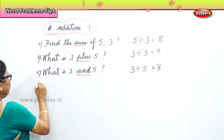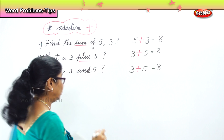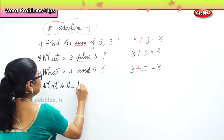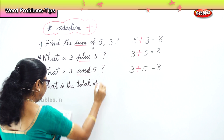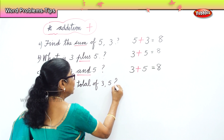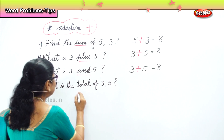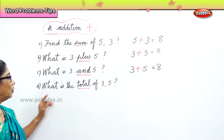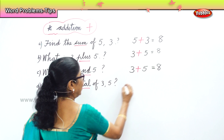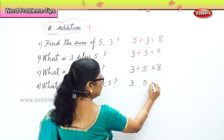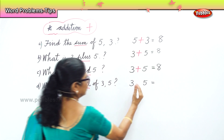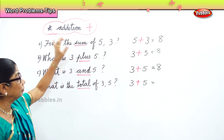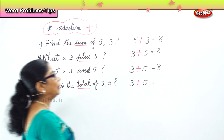Another small problem. What is the total? When you say total — total means plus. We must remember. What is the total of three and five? Total means addition. Sum, plus, and total — all these wordings you need to bear in mind. So, three plus five equals eight.